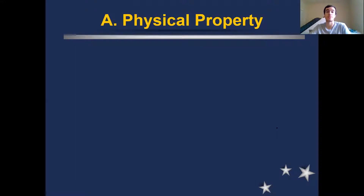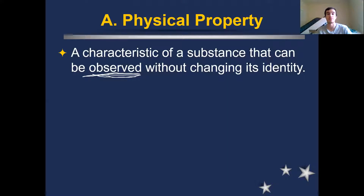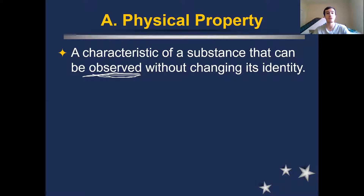First up we have physical properties of matter, of substances. A physical property is a property or characteristic of a substance that you can observe without changing its identity, without changing it into something new. If you remember from when we talked about the scientific method, observations are anything that you can determine using your five senses — sight, smell, touch, taste, and hearing. All of these are different observations you can make about an object, and if you're observing something about a particular substance, you are observing one of its physical properties.